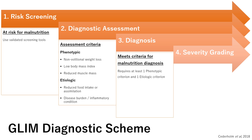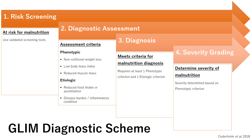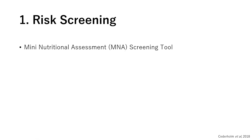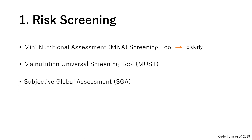The fourth level is severity grading, which only makes use of the phenotypic criterion. For risk screening, any validated screening tool can be used. The mini nutritional assessment screening tool is widely used but is mostly for the elderly. The malnutrition universal screening tool and the subjective global assessment are both appropriate for adults. Ensure you are using a validated screening tool appropriate for your patient population.